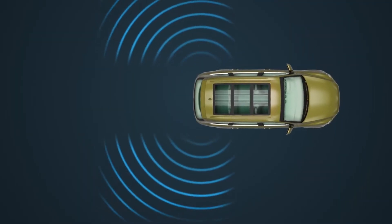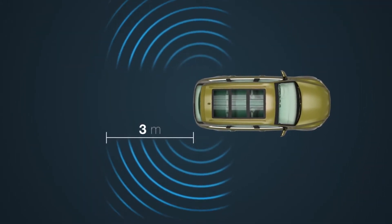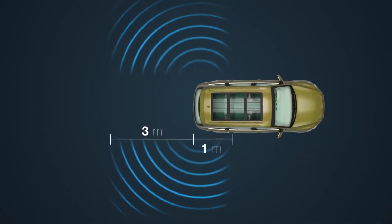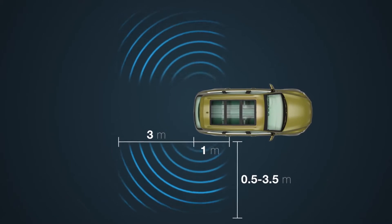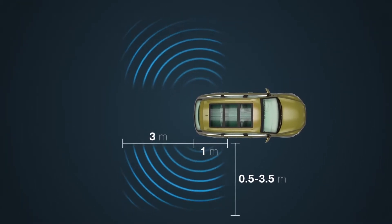The area in which a target vehicle can be detected extends from up to three meters behind to one meter ahead of the back of the Toyota's rear bumper and from one-half to three and one-half meters outward on either side of it.